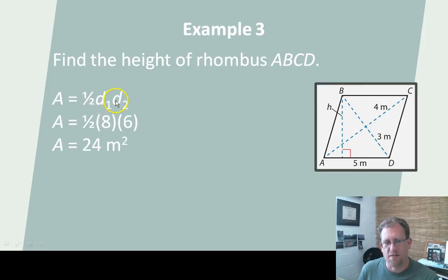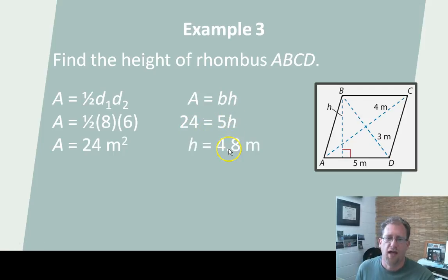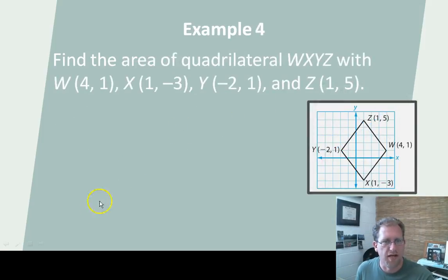So, one-half times the diagonal one times diagonal two: ½(8)(6). Eight times six is 48. Half of that is 24. The area of this rhombus, according to the kite formula, is 24 m². But it's also a parallelogram. So if the formula for a parallelogram also works, base times height, and the area is 24, then 24 equals 5h. And I can tell you that the height is 4.8 m. Any questions with that, we'll go through it in class tomorrow.